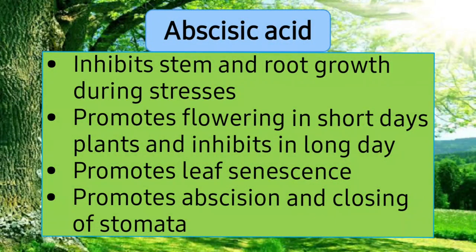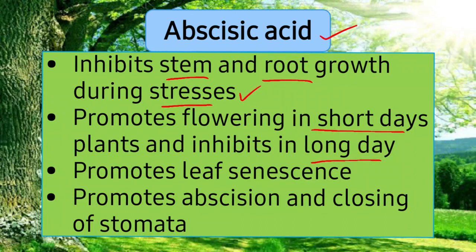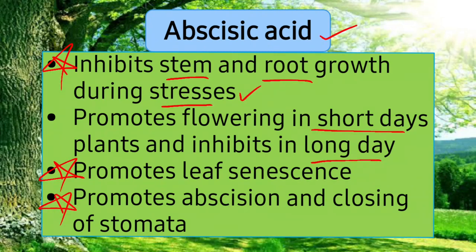Now we talk about inhibitors. The first inhibitor is abscisic acid — its job is to stop growth. It inhibits stem and root growth during stresses. As seen in the previous lecture, during drought conditions — when water is absent — this is a stress condition, and abscisic acid inhibits stem and root growth. It promotes flowering in short-day plants but inhibits flowering in long-day plants. It also promotes leaf senescence — this is an important difference from the stimulators, which delay leaf senescence.